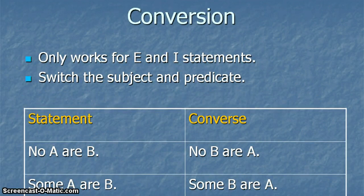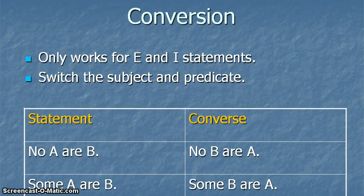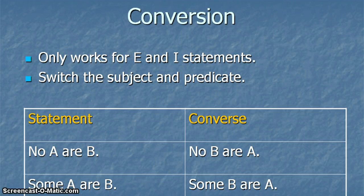Let's start with conversion. Conversion only works for E and I statements. With conversion, you switch the subject to the predicate. So no A are B — no dogs are cats — is the same as no cats are dogs. Some A are B — some dogs are poodles — is the same thing as some poodles are dogs. That's not going to work for an A statement or an O statement. For example, all dogs are mammals is not the same as all mammals are dogs. Some dogs are not poodles is not the same thing as some poodles are not dogs.